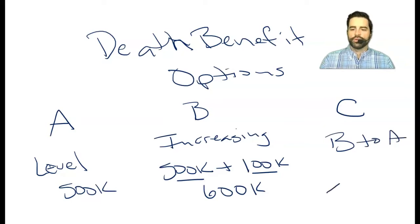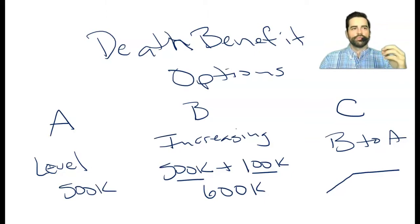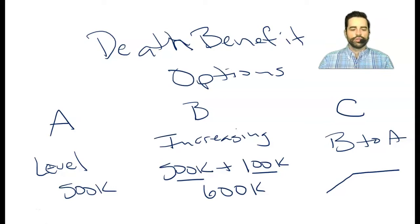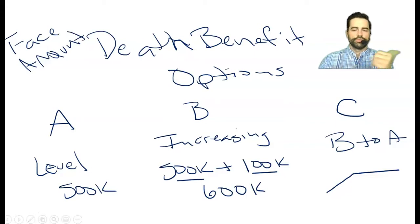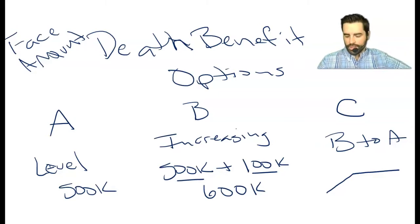Option C is a combination — it starts as Option B (increasing) and at some point levels off to Option A. You see this a lot with IULs that have some type of SRLA — Supplemental Retirement Account — attached. Someone pays their premiums, accumulates a growing death benefit, and then at age 65 when they retire, they level off the policy. Finally, face amount: your face amount and your death benefit are the exact same thing. You'll hear those terms interchanged, but they mean the same thing.